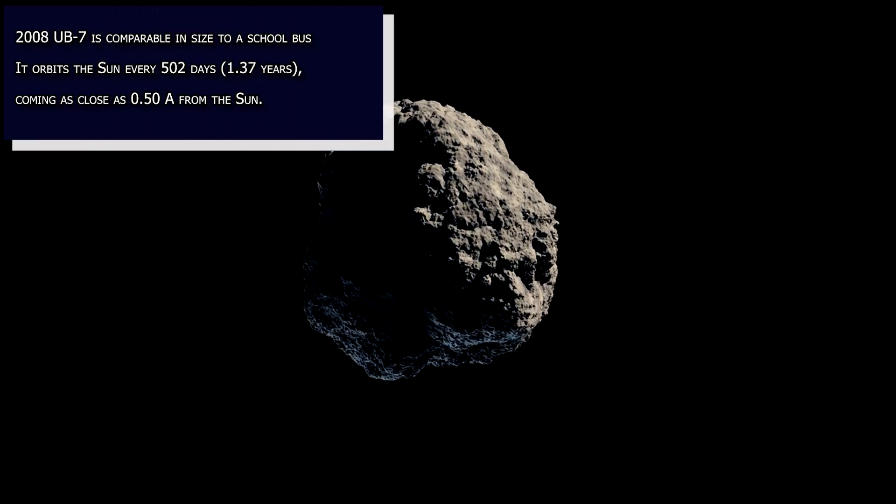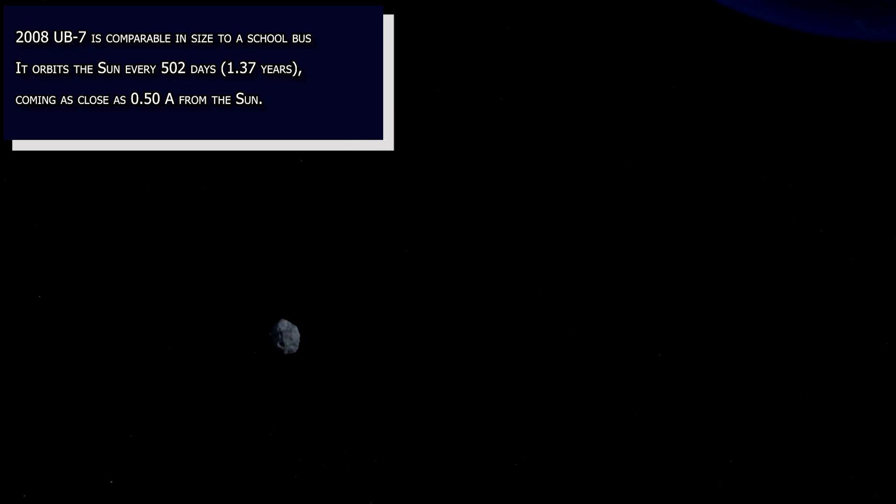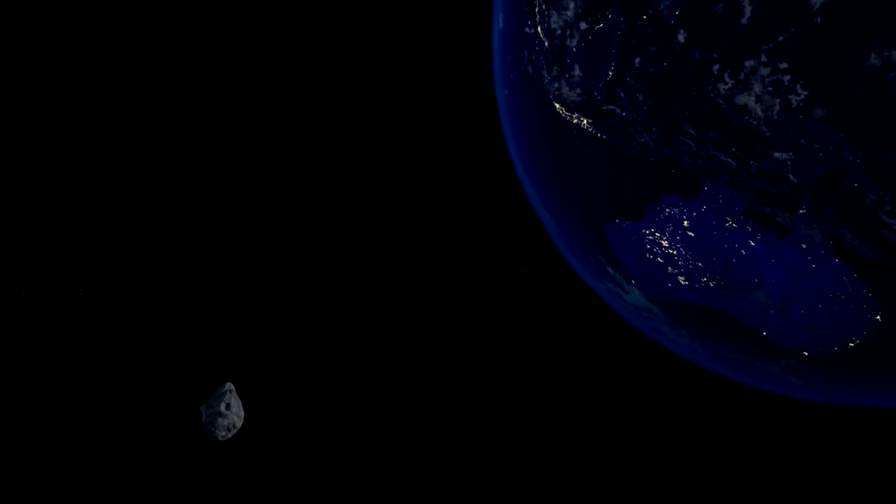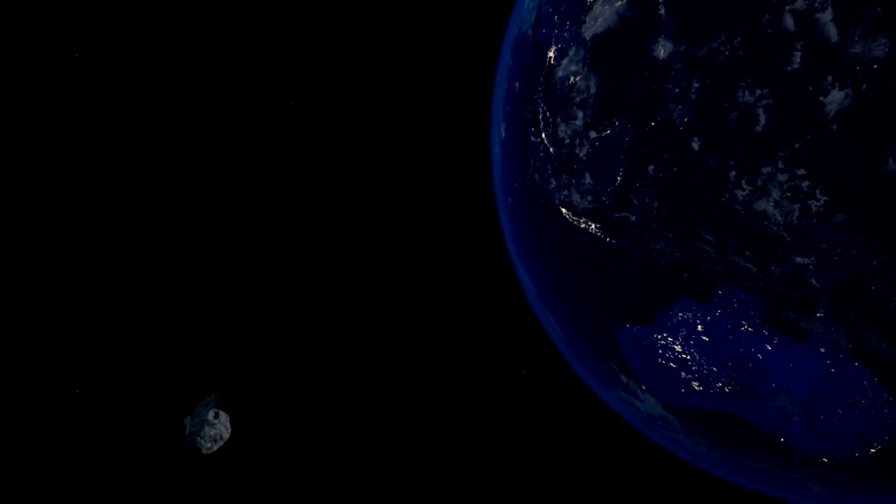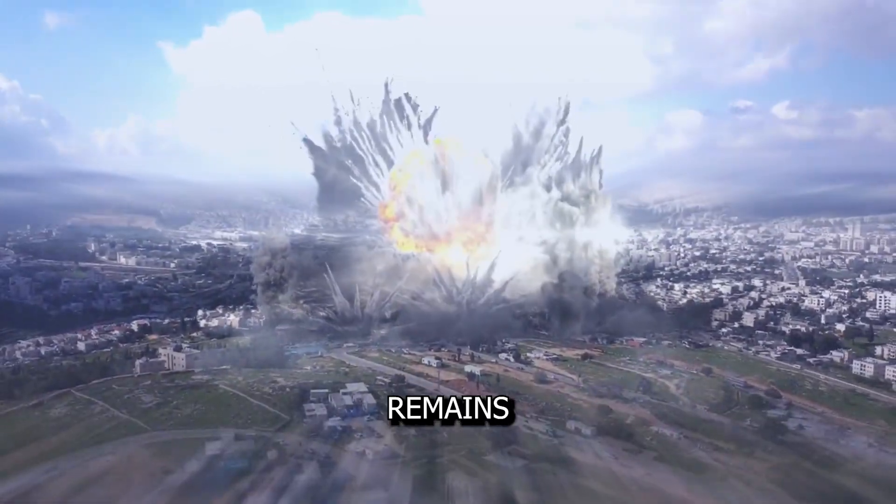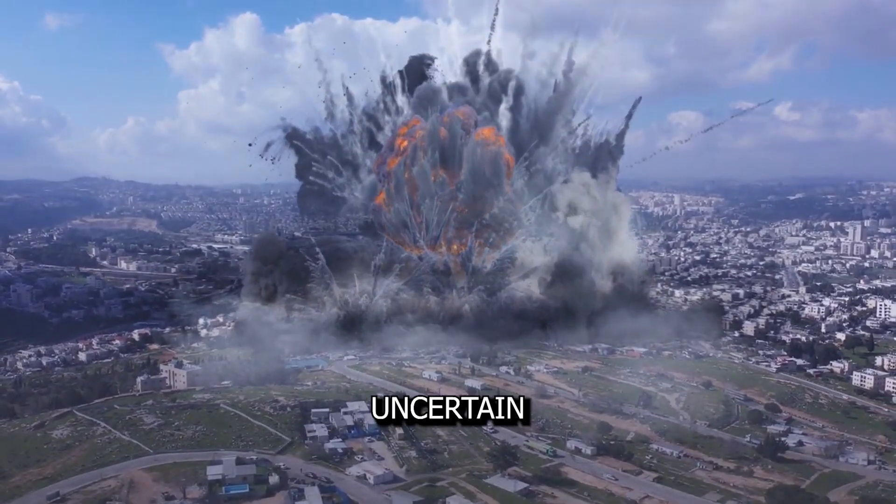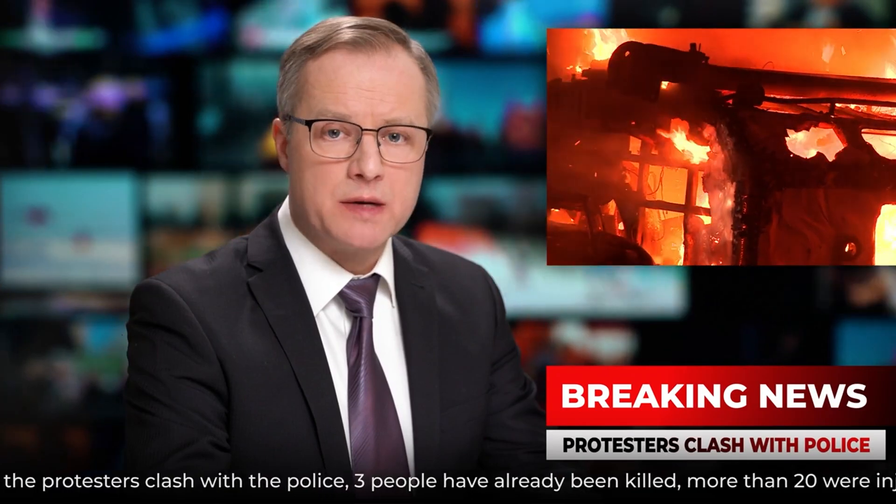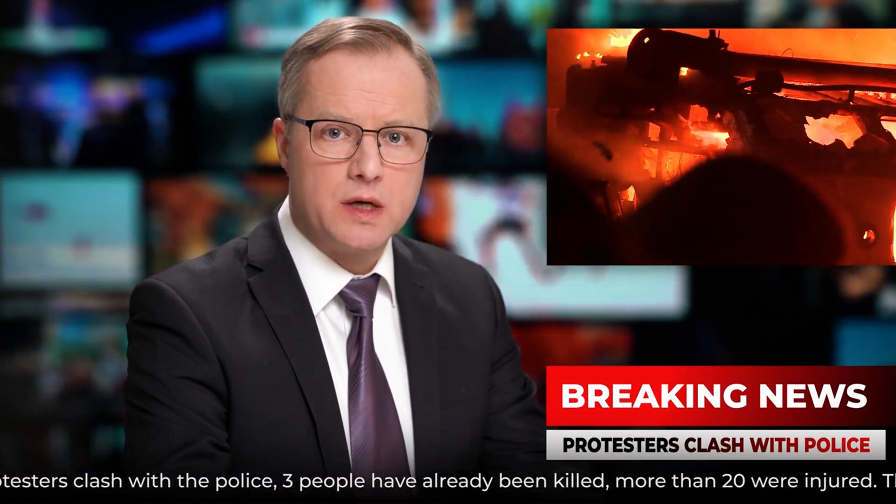Number five, 2008 UB7. Discovered back in 2008, this relatively small asteroid, measuring approximately 0.058 kilometres in diameter, may seem harmless. But it packs enough punch to level a city, and its long-term trajectory remains somewhat uncertain. Picture the news alerts: potentially hazardous asteroid on uncertain trajectory.